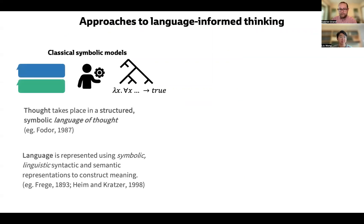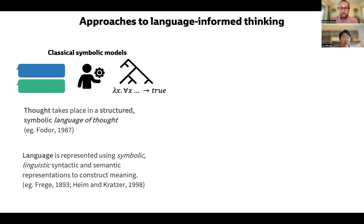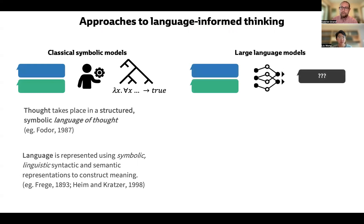Now, of course, many older and more traditional cognitive theories of language and thought have posited that both language and thought are represented using symbol-like systems in human minds — either a compositional and expressive language of thought for representing thinking, and symbolic linguistic structures for constructing meaning that map from sentences into semantic representations.